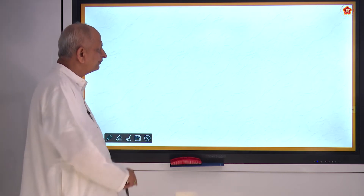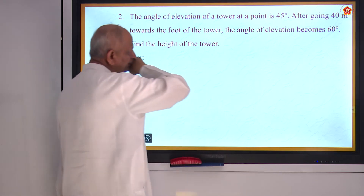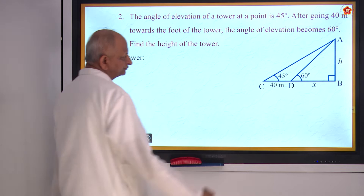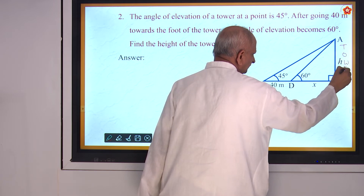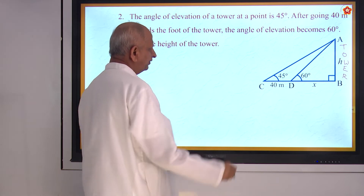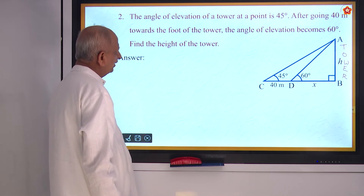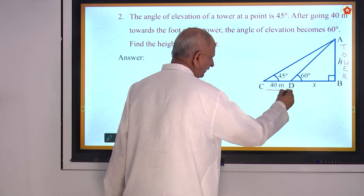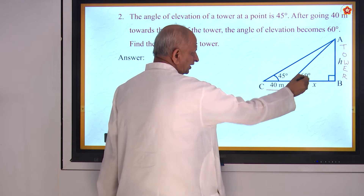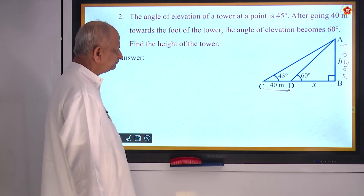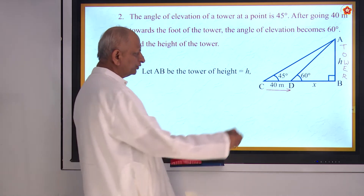Second question: the angle of elevation of a tower at a point is 45 degrees. There is a tower observed from two points. At a point C the tower appears at an angle of elevation of 45 degrees. After going 40 meters towards the foot of the tower, the angle of elevation becomes 60 degrees. Find the height of the tower. Let the height of the tower be h. Here are two unknowns: x and h.